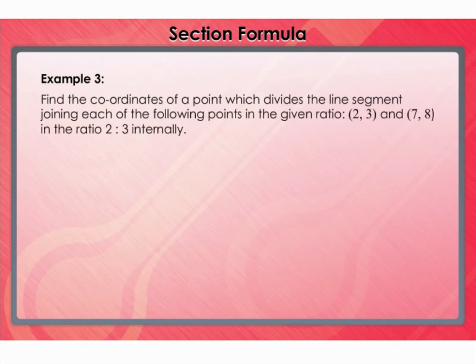Let us move to another example. Find the coordinates of a point which divides the line segment joining the following points in the given ratio: (2, 3) and (7, 8) in the ratio 2:3 internally.